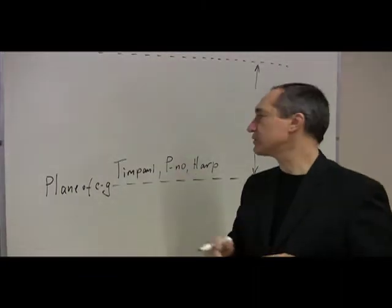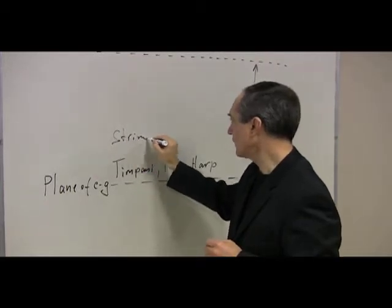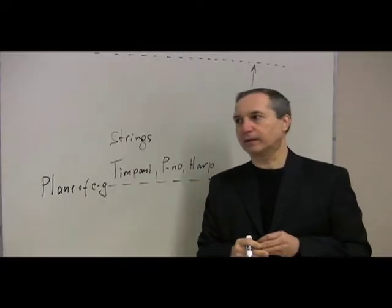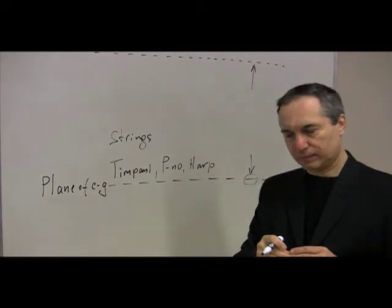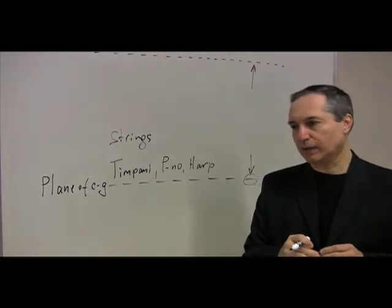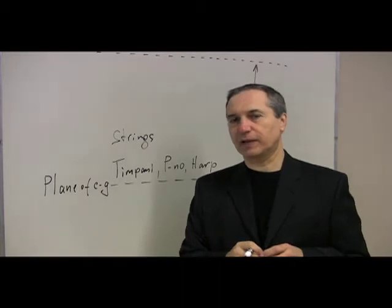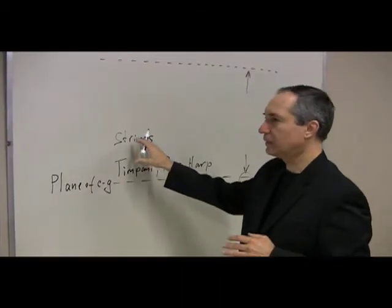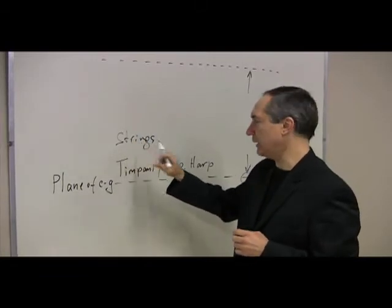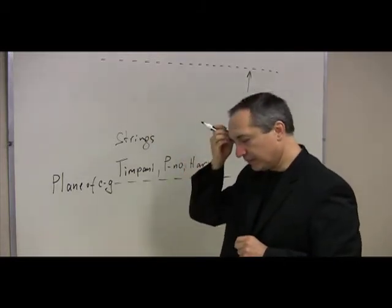Then the next layer of instruments obviously will be strings. But even among strings, we can notice that violins, the highest string instruments in range of sound, respond differently than double bass. We will not put it in detail, but we'll just keep in mind that there is a difference even within the string section.